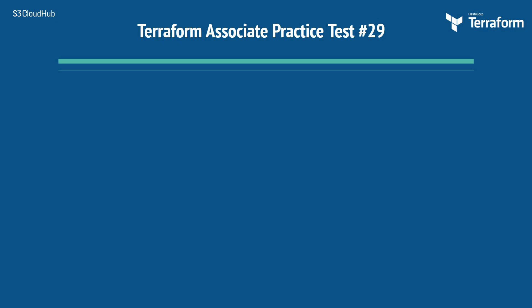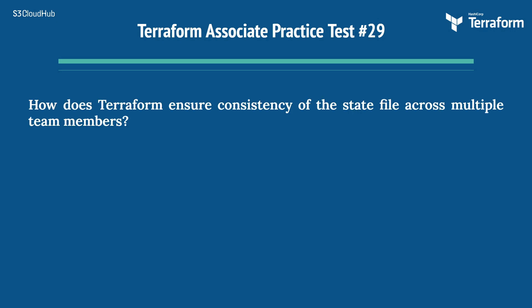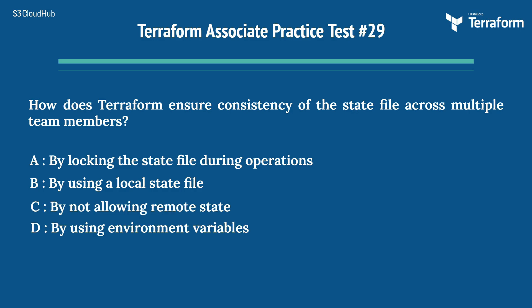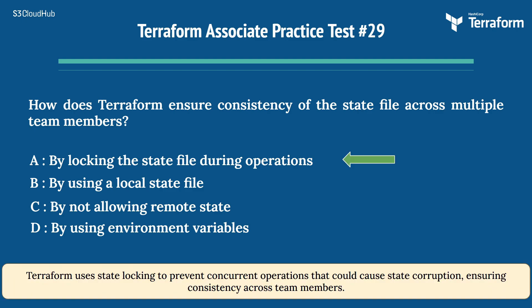Question 29: How does Terraform ensure consistency of the state file across multiple team members? Options: A) By locking the state file during operations, B) By using a local state file, C) By not allowing remote state, D) By using environment variables. The right answer is A) By locking the state file during operations. Terraform uses state locking to prevent concurrent operations that could cause state corruption, ensuring consistency across team members.